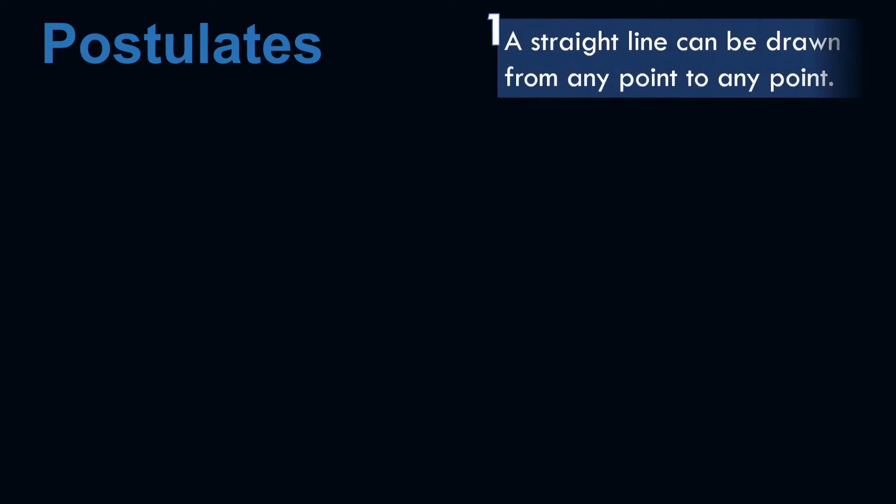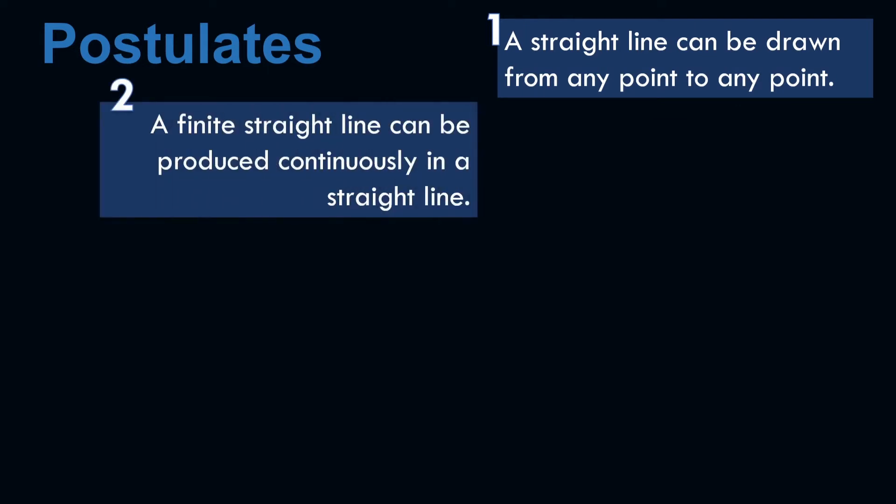Euclid has five postulates. The first one is a straight line can be drawn from any point to any point. Number two, a finite straight line can be produced continuously in a straight line.